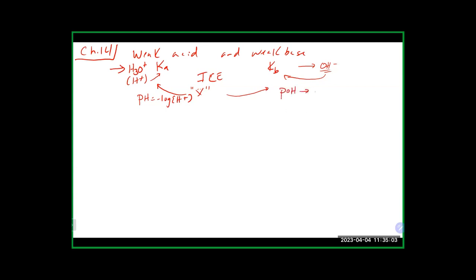When doing the ICE table, you can make assumptions like normal - if it works, make sure you check it. For weak acids, solving for x gives you the H+ concentration, which goes into the pH equation. For weak bases, x gives you the hydroxide concentration, so you need to go to pOH first, then to pH. Sometimes you're given the incorrect K value - if you're given Ka when you need Kb, remember that Ka times Kb equals Kw, which is 1×10⁻¹⁴.